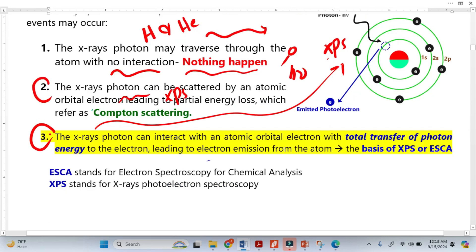Now the third phenomenon is the basis of XPS. When the photon completely converts its energy to the core electron, the core electron is ejected from the sample. The famous photoelectric effect equation states that the X-ray photon energy (hν) is equal to the binding energy of that electron